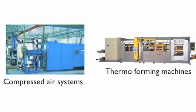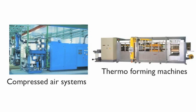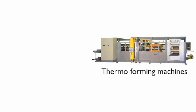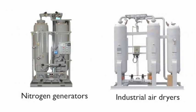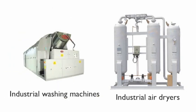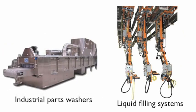The VA valve is ideal for fast acting, high cycle applications such as compressed air systems, plastic thermoforming and injection molding machines, nitrogen generators, air dryers, industrial washing machines, liquid filling systems, and industrial parts washers.